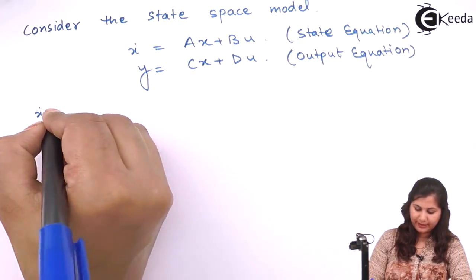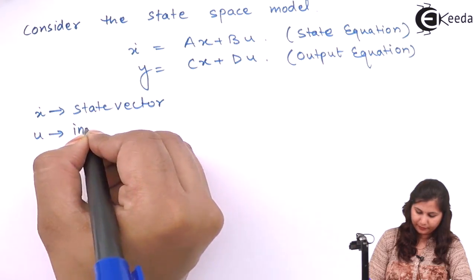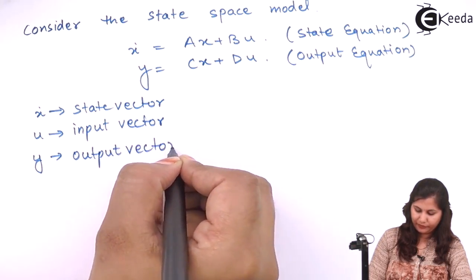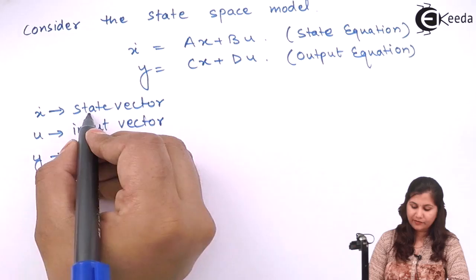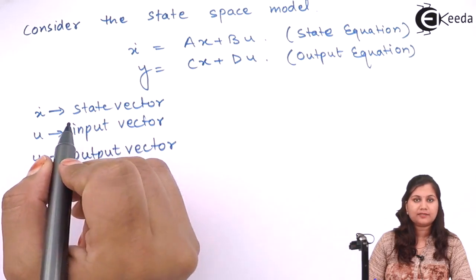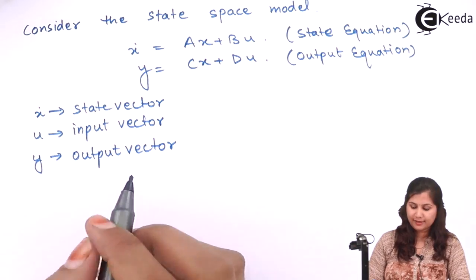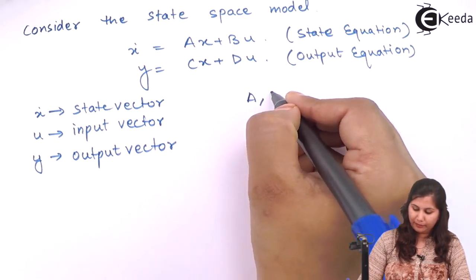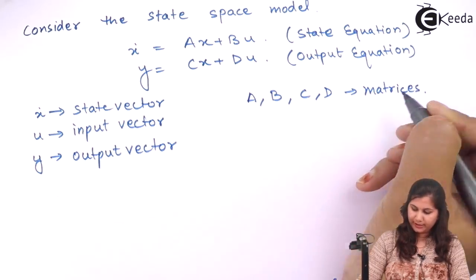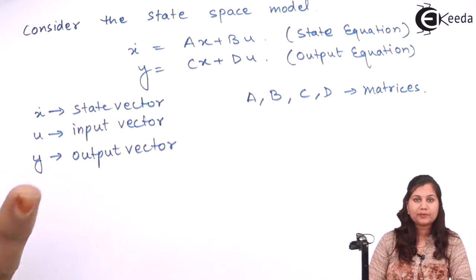Here, x-dot is the state vector, u is the input vector, and y is the output vector. The state vector defines all the states of the system, the input vector defines all the inputs, and the output vector y defines all the output variables of the system. A, B, C, and D are the matrices of this state space model.